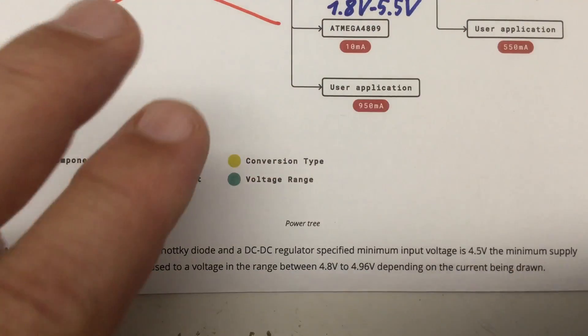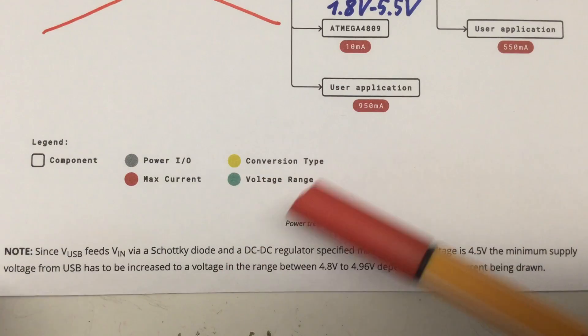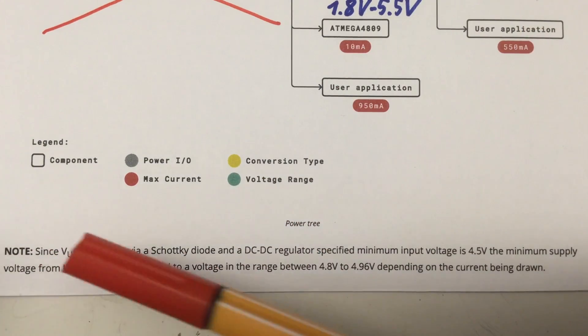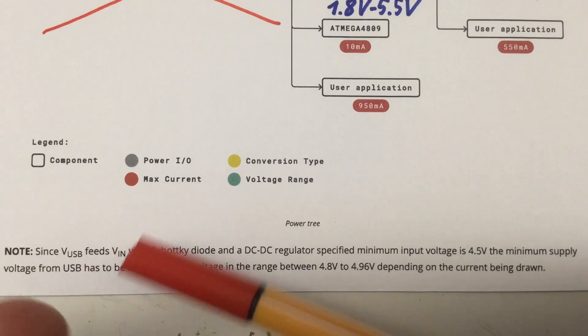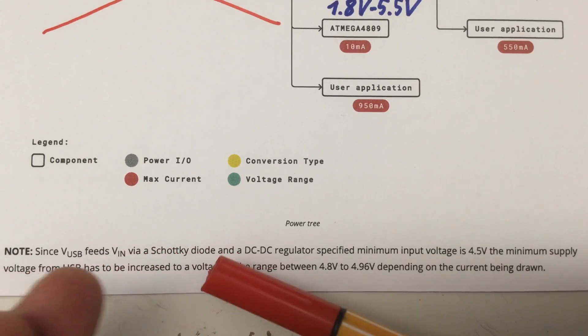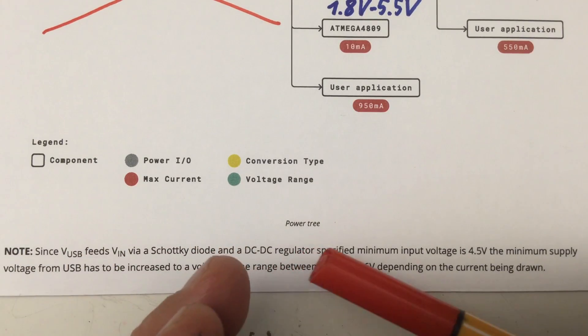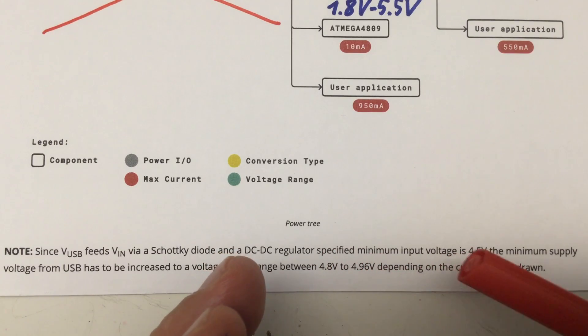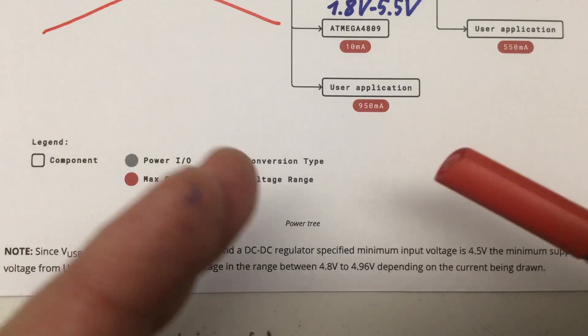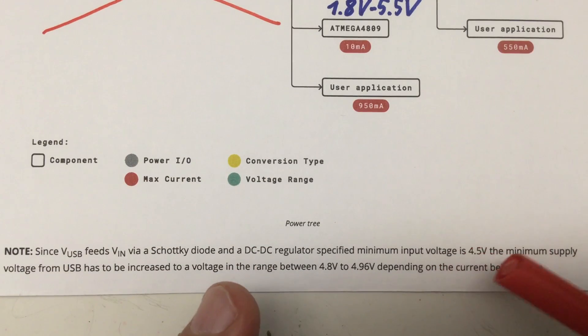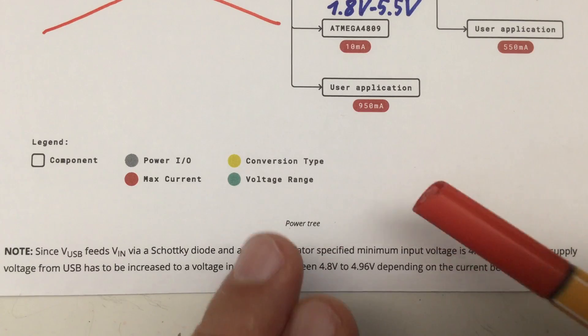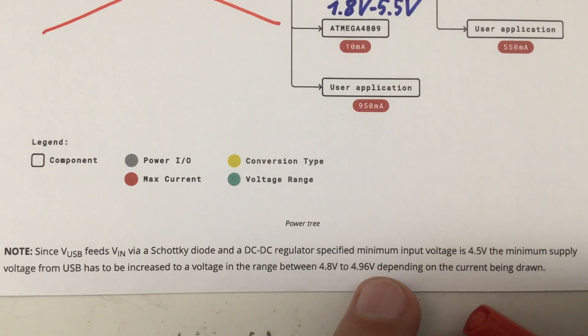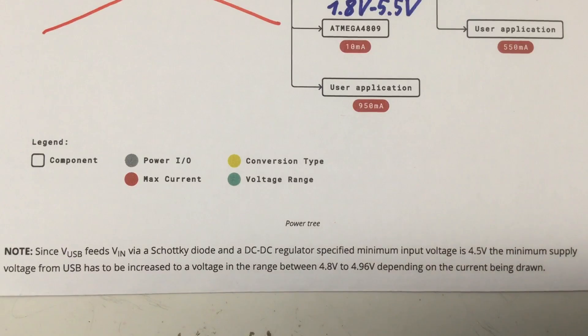The footnote to the power tree diagram is not a saving grace here because it states since V-USB feeds V-in, which it doesn't, and DC-DC regulator's specified minimum input voltage is 4.5 volts, no it isn't, it's 7 volts. The minimum supply voltage from USB has to be increased to a voltage in the range between 4.8 to 4.96 volts. Remember that voltage drop between 250 and 450 millivolts depending on the current being drawn.